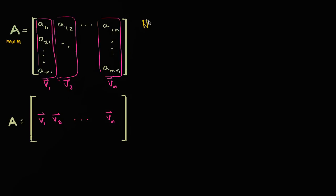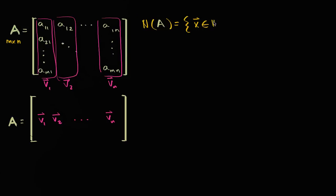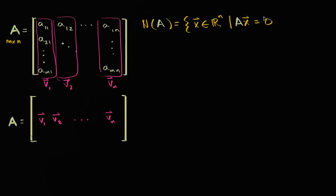I want to relate the linear independence of these vectors to the null space of A. So let's remind ourselves what the null space of A is. The null space of A is the set of all vectors x that are members of R^n, such that if I take matrix A and multiply it by one of those x's, I get the zero vector.